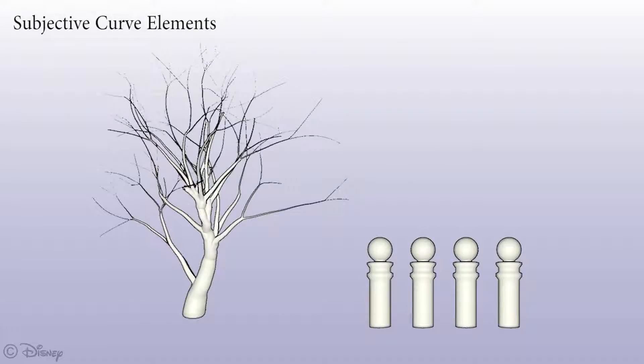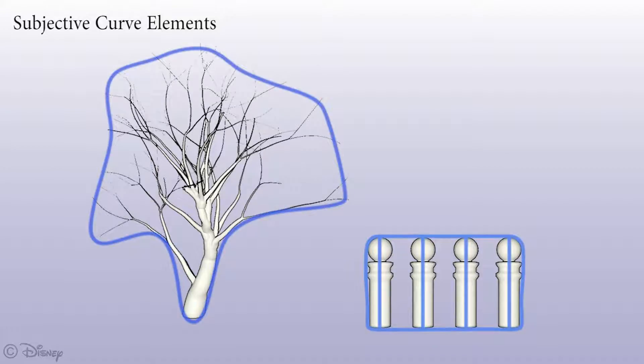The first part of our solution consists in automatically computing subjective curve elements in a scene which represent potential fragments of subjective curves. We call them C curves for subjective elements.